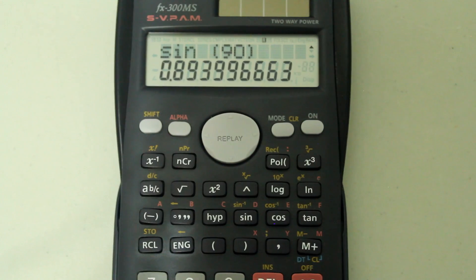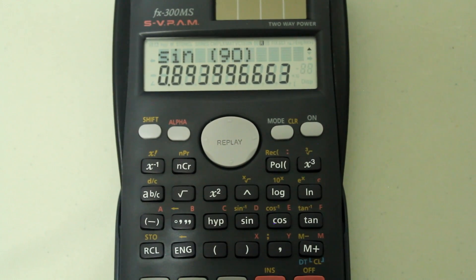The answer isn't necessarily wrong, but the calculator is in radian mode and we typed in sine of 90 degrees. To get the calculator from radian mode to degree mode, press the mode button.